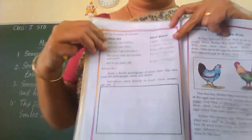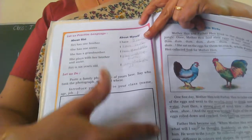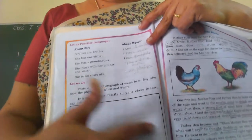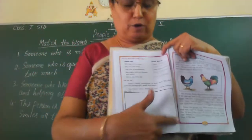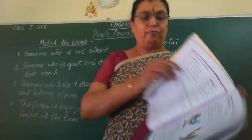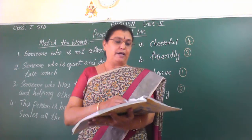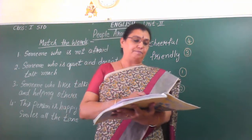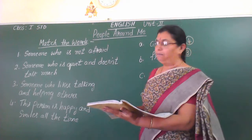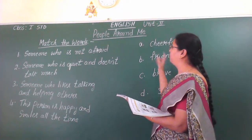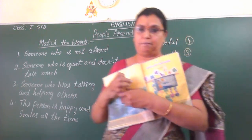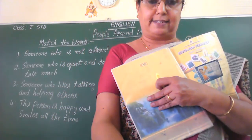You have to stick your family photograph and write how many sisters and brothers. You should stick it here in this box. This is your homework — the textbook activity. So we completed part one, 'People Around Me.' Okay children, bye. See you in the next class. Bye, thank you.